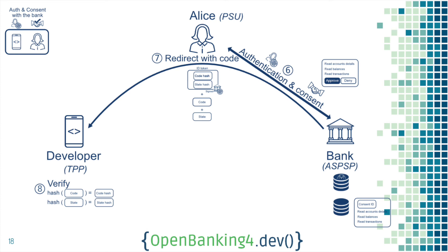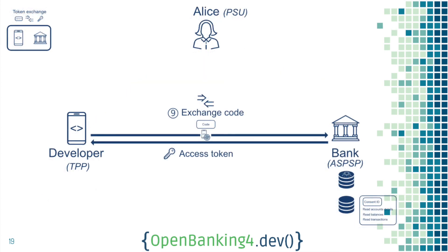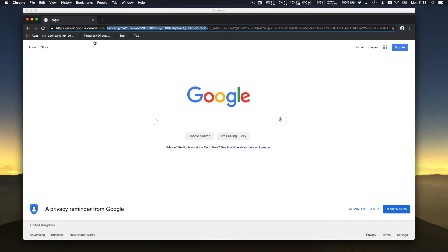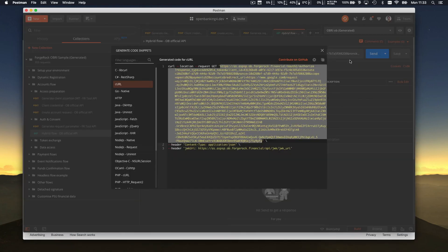We'll jump directly to step 9, which is about taking the code from the URI on google.com and sending it to the bank. For that we need to authenticate — there's the fingerprint, this is an MTLS endpoint — and we'll use our transport certificate. Let's go back to Google, extract the code from the URI fragment, copy it, and go back to Postman.